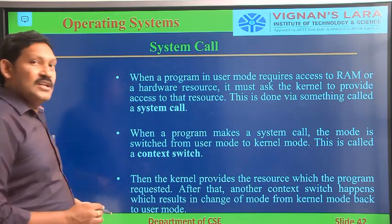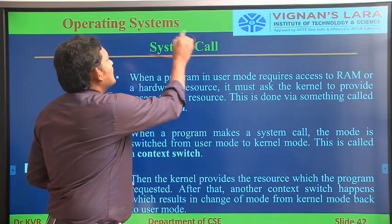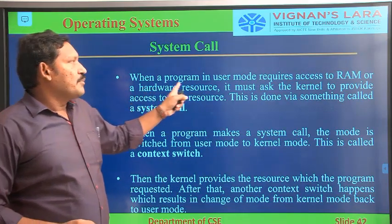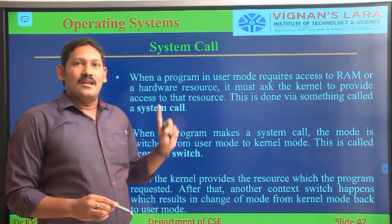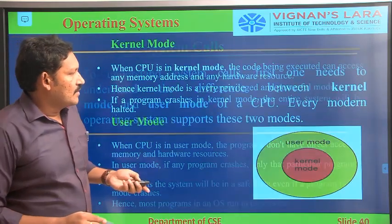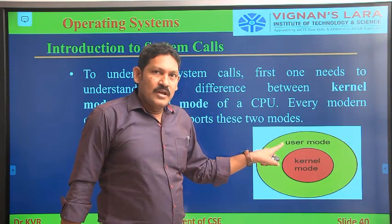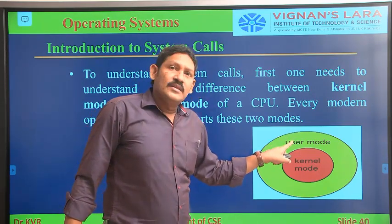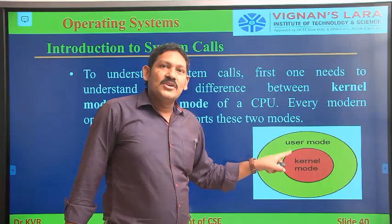Next, we will see what is the system call. A system call is nothing but: when a program is in user mode and if it requires any RAM or any resources, it must ask the kernel to grant the permission. This is done via something called a system call. If the program is executing in user mode and wants to use any resources or memory locations, the user mode will keep a request to the kernel mode — that request we simply call it a system call.